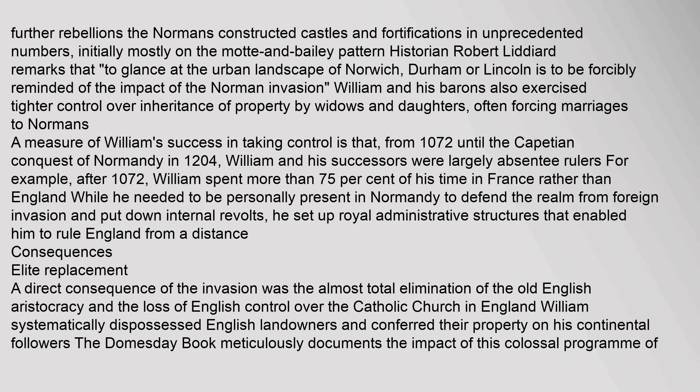To put down and prevent further rebellions, the Normans constructed castles and fortifications in unprecedented numbers, initially mostly on the motte and bailey pattern. Historian Robert Liddiard remarks that to glance at the urban landscape of Norwich, Durham or Lincoln is to be forcibly reminded of the impact of the Norman invasion. William and his barons also exercised tighter control over inheritance of property by widows and daughters, often forcing marriages to Normans. From 1072 until the Capetian conquest of Normandy in 1204, William and his successors were largely absentee rulers. After 1072, William spent more than 75 percent of his time in France rather than England.